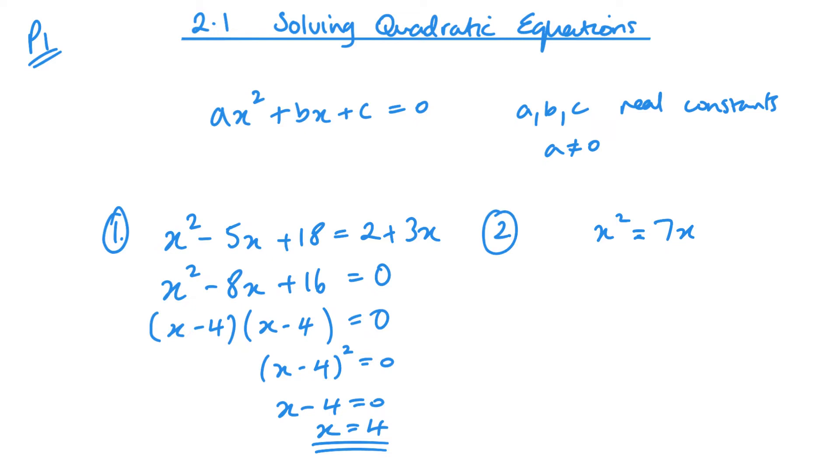x squared minus 7x equals 0. I don't divide, I need to factorize. Taking x out, x minus 7 inside the brackets. This means x equals 0 or x minus 7 equals 0, so x equals 7. If you divided by x, you'd actually lose this solution, which would lose you most of the marks.